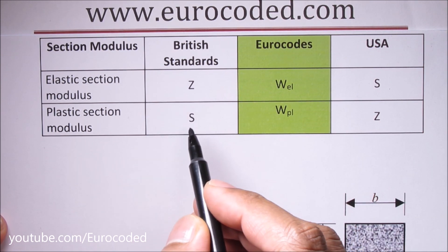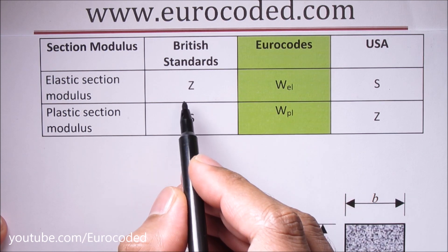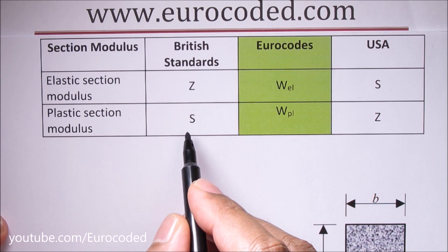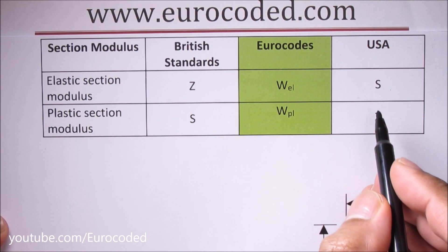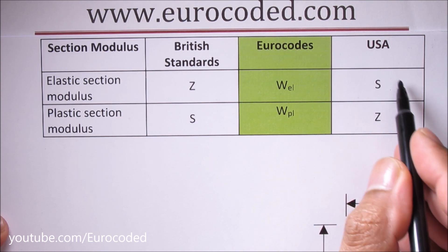In the UK in British standards, elastic section modulus is noted as Z and plastic section modulus is noted with S. However in the US this is the other way round, as you can see in this table.